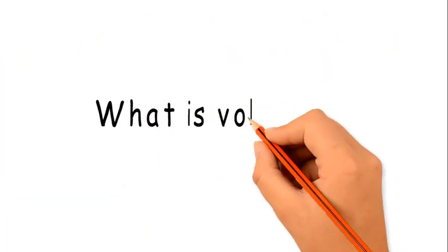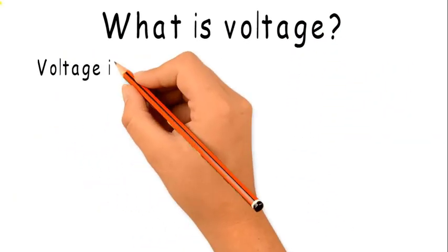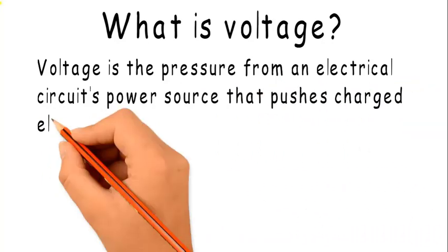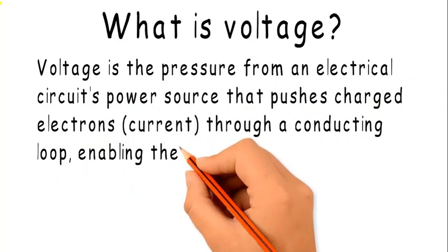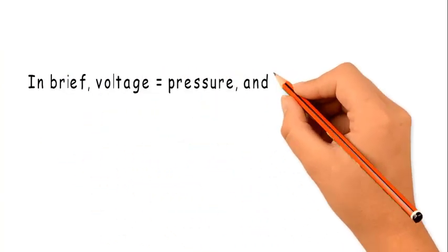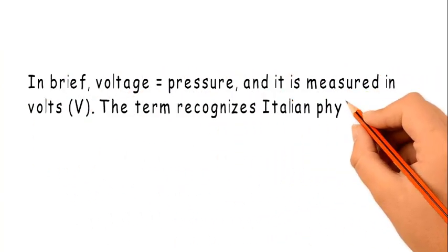What is voltage? Voltage is the pressure from an electrical circuit's power source that pushes charged electrons (current) through a conducting loop, enabling them to do work such as illuminating light. In brief, voltage equals pressure. It is measured in volts (V).